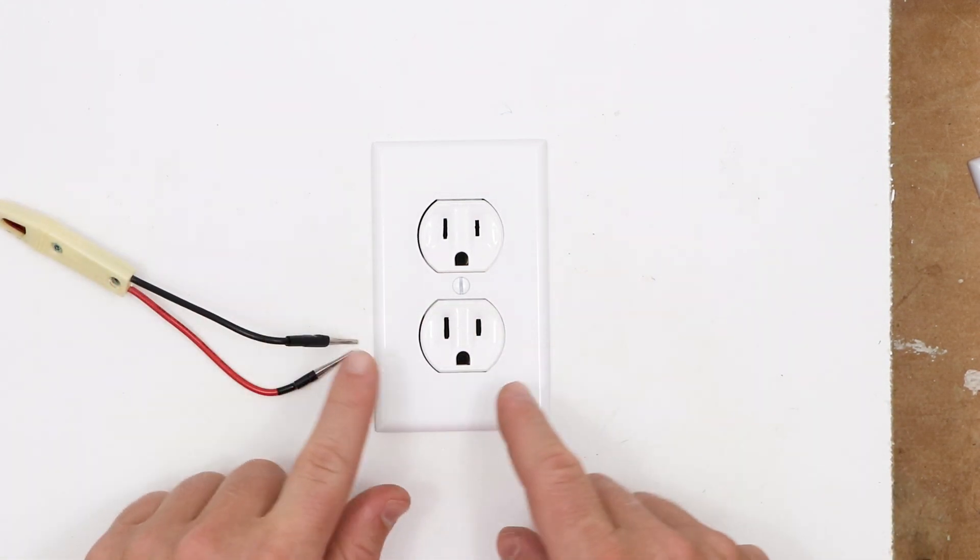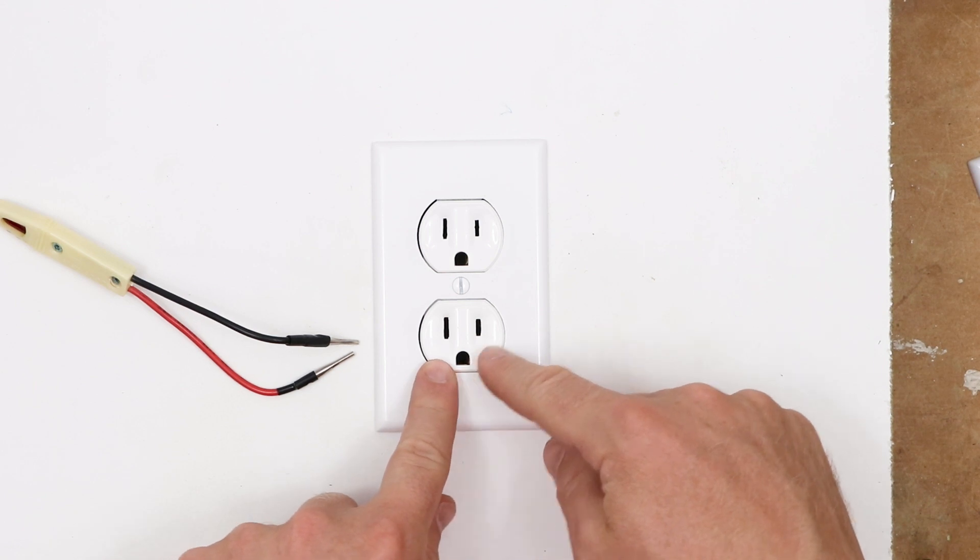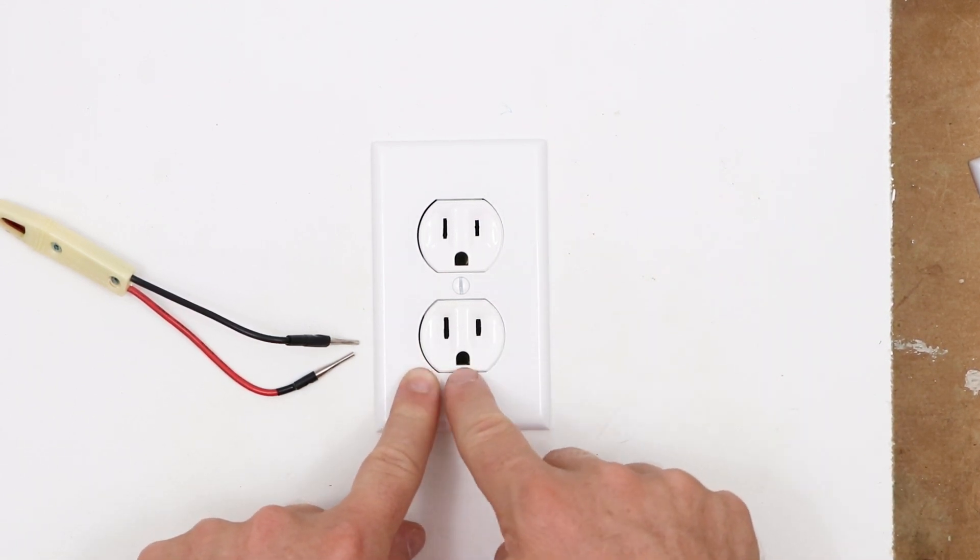Now you won't be able to test whether or not the ground and the neutral are reversed because they do the same exact thing. But if you've wired the hot correctly, then you've probably wired the ground correctly.